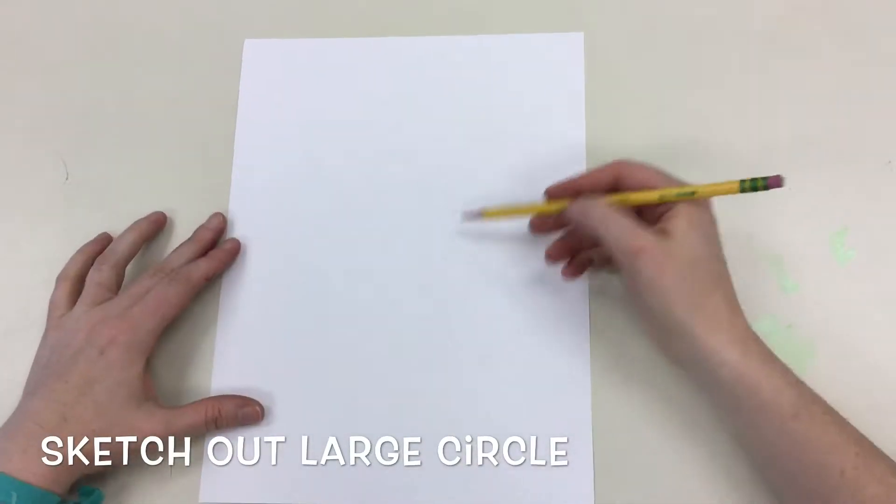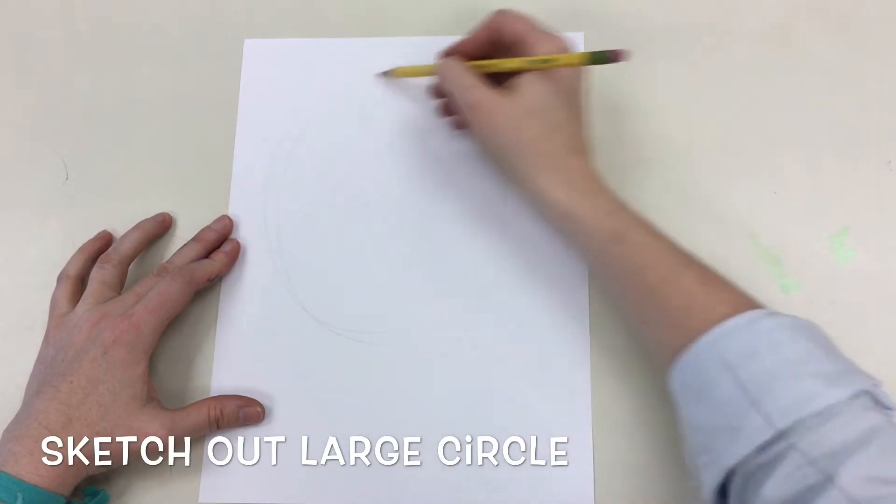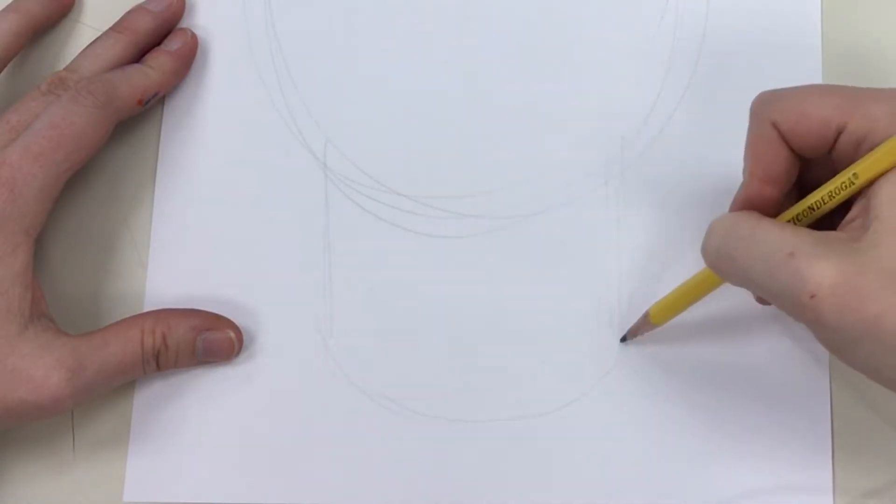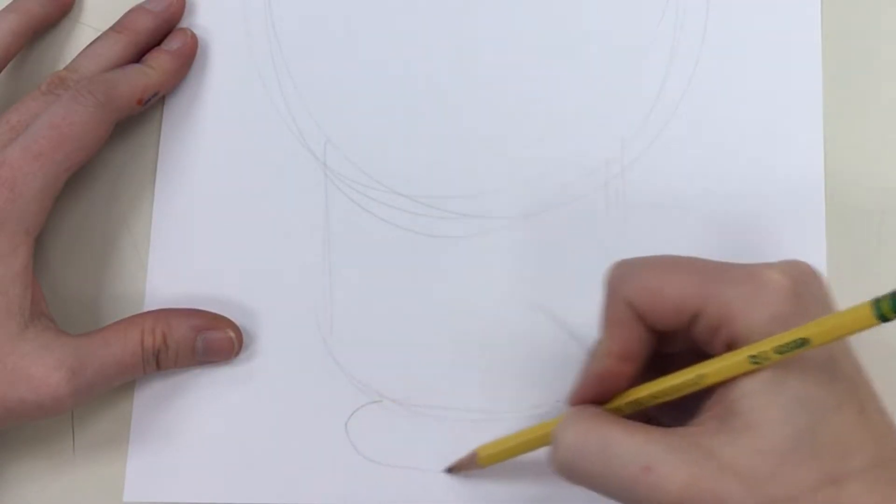First, we're going to sketch out a large circle for the head of our skull. Next, you're going to draw two straight lines on each side and a smiley face for the chin.